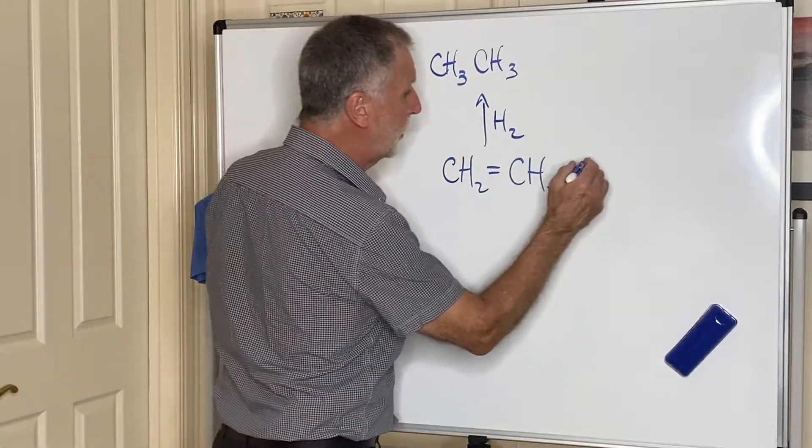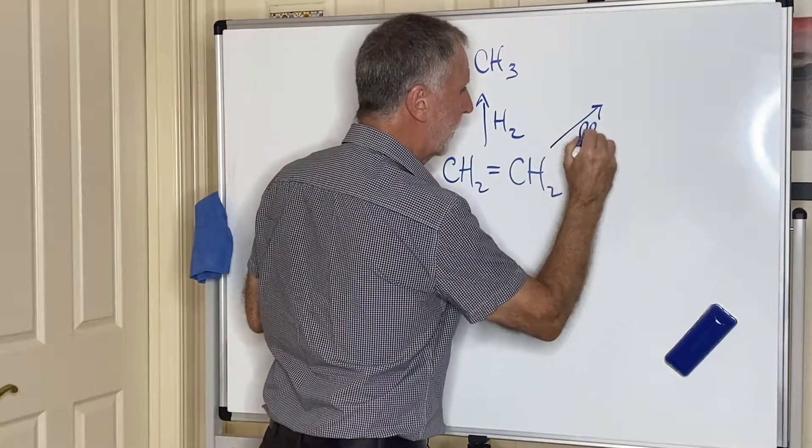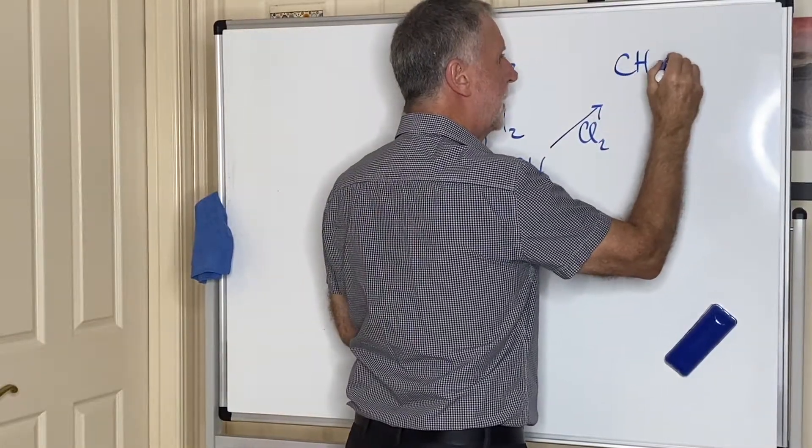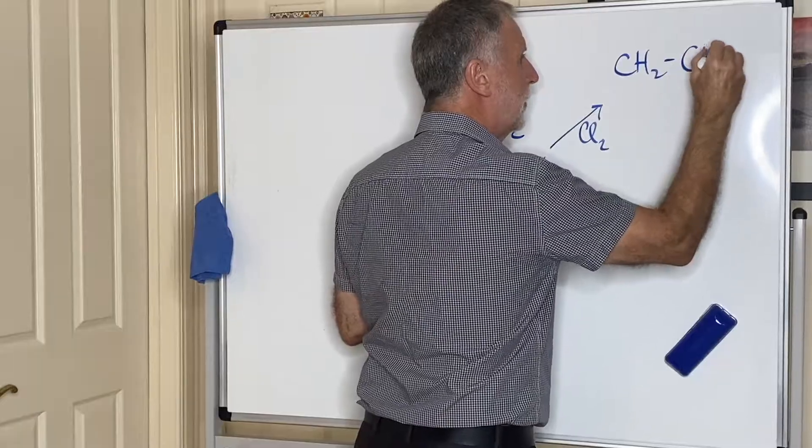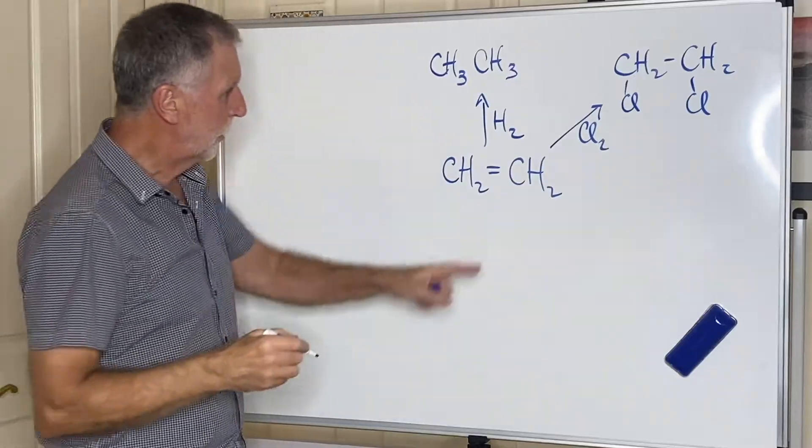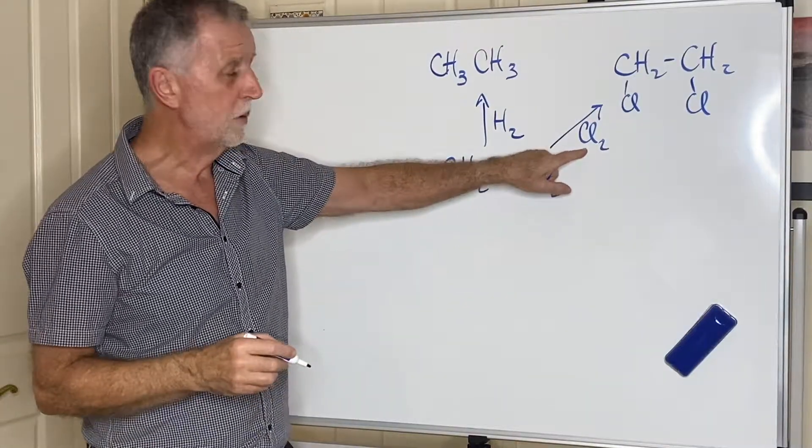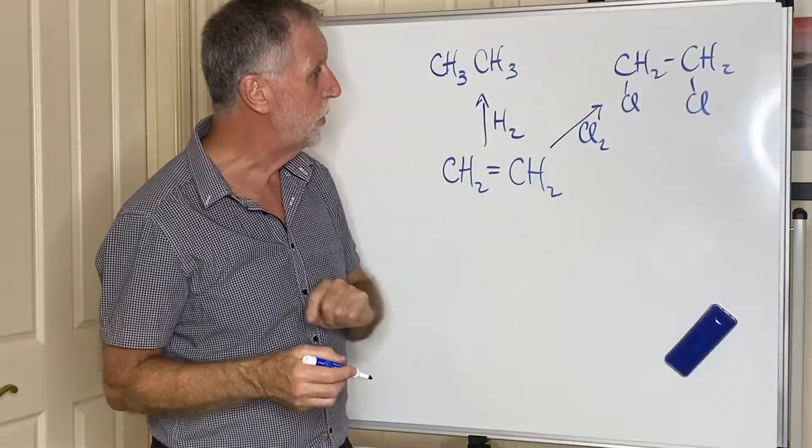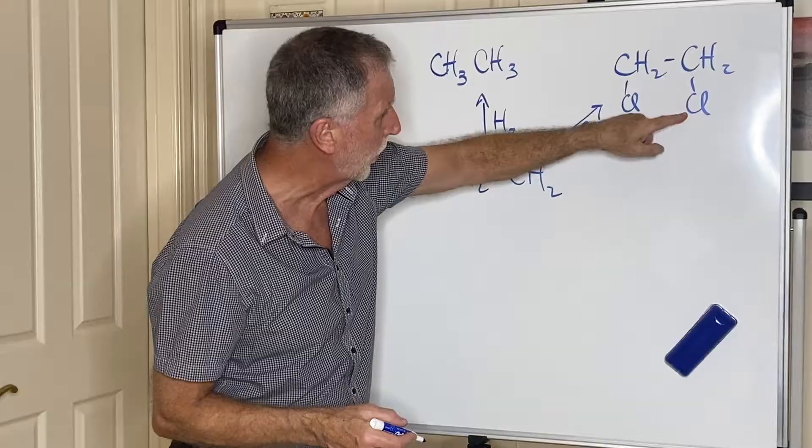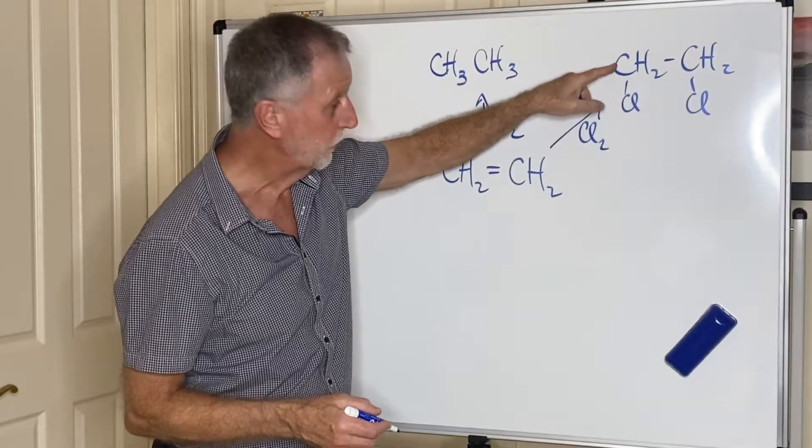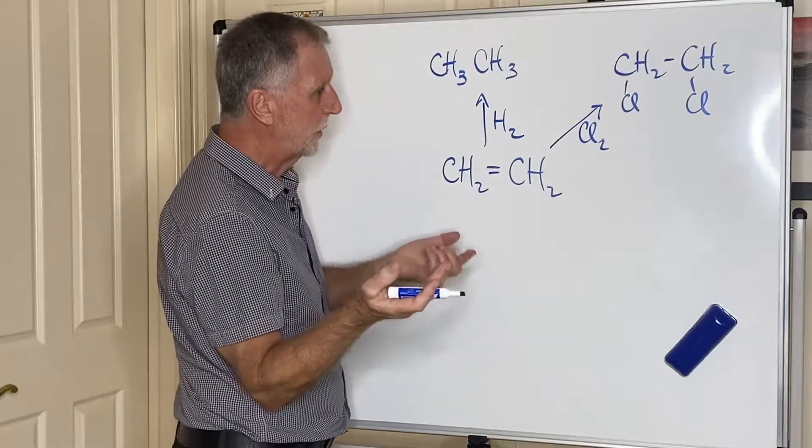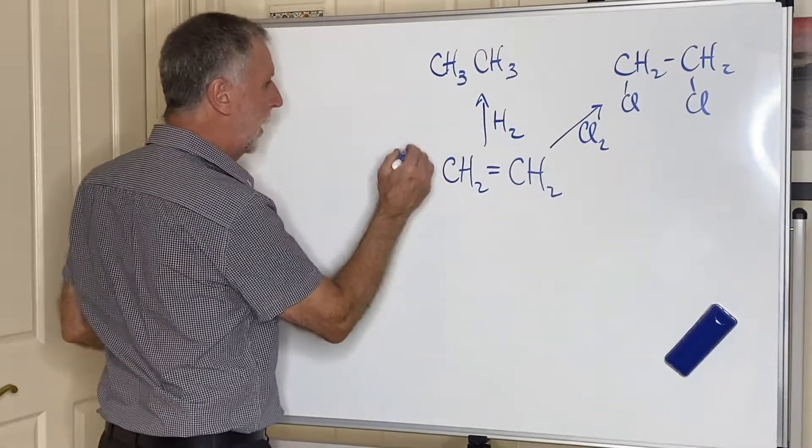Another one that you can do involves a halogen like chlorine. You can add chlorine, which now does this: CH2-CH2-CH2, and chlorine goes there and a chlorine goes there. So if you add a halogen like chlorine, and it adds very easily, it'll turn it into dichloro-1,2-dichloro-ethane. Okay, now I've chosen chlorine because that's probably the most common halogen you're familiar with. However...